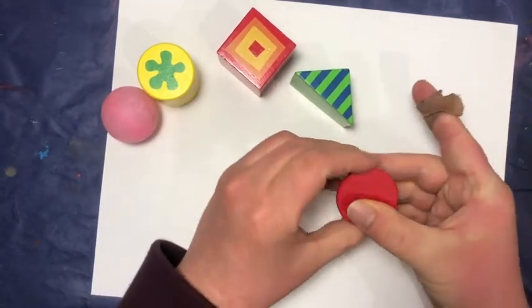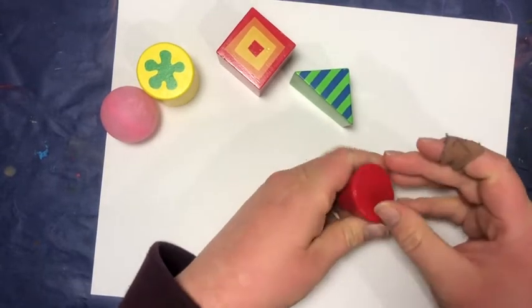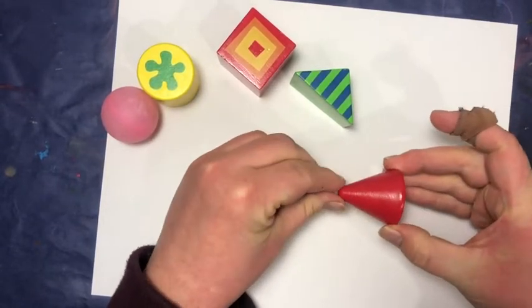This is a cone. From one side looking at it, you see a circle. From other sides, you see a triangle.